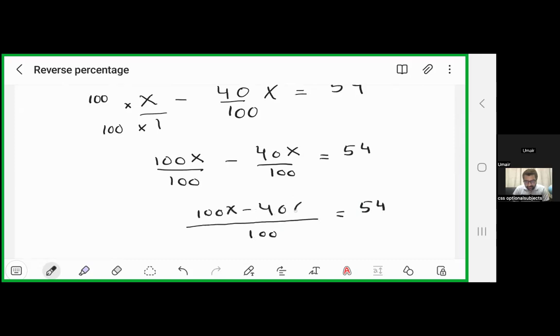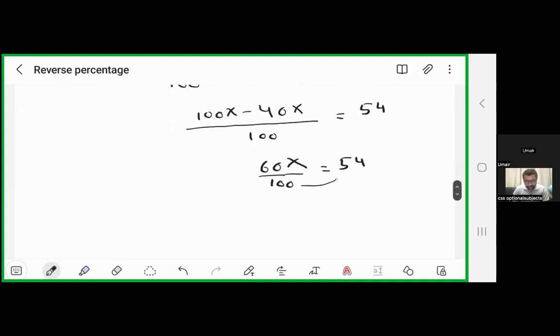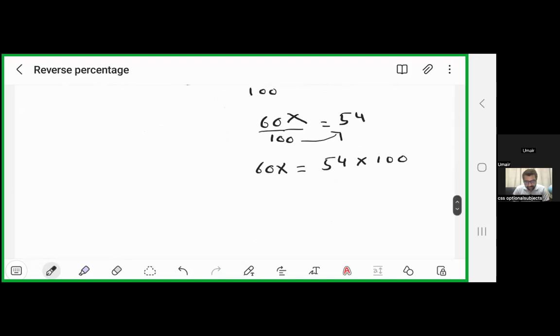So 60x is equal to 54. So this 60x is equal to 54 by 100, so this 60 will be going on the right side.